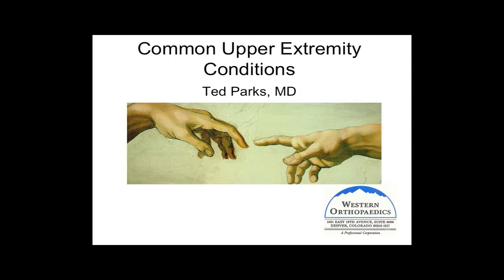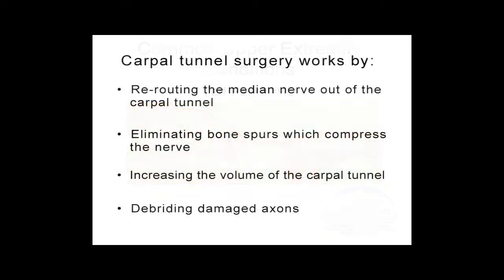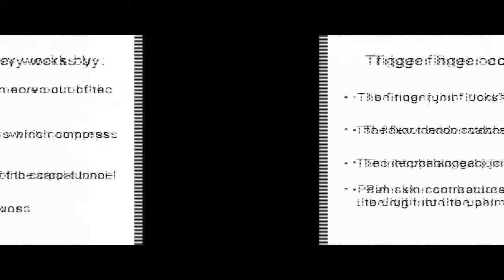We're going to do some questions — a couple at the beginning and end of this one like we did on the shoulder. Carpal tunnel surgery works by: A, rerouting the median nerve out of the carpal tunnel; B, eliminating bone spurs which compress the nerve; C, increasing the volume of the carpal tunnel; or D, debriding damaged axons.